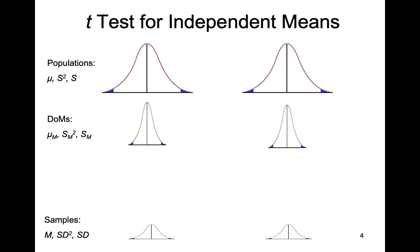With the t-test for independent means, we also have distributions of means. Similar to a single sample t-test and a t-test for dependent means, the distribution of means asks what would happen over the long run if we repeatedly sampled from a population with known characteristics — that is, if we know the mean and variance and take repeated samples of a particular size, what will that distribution of means look like? With two populations, we have two distributions of means, each reflecting a repeated sampling process from its parent population.